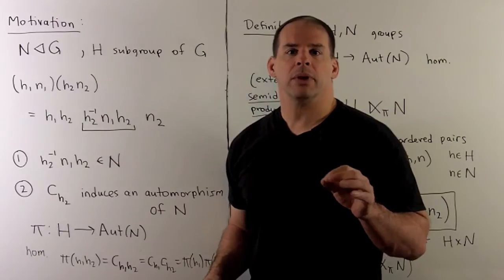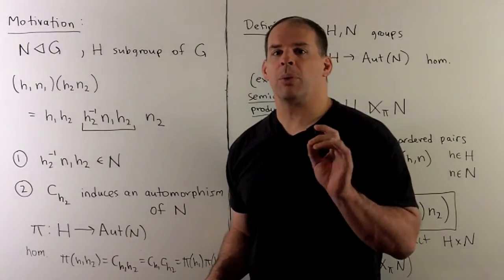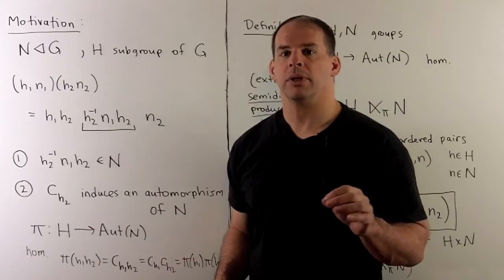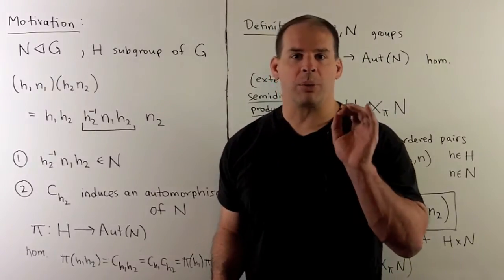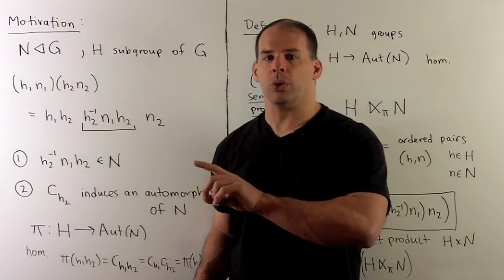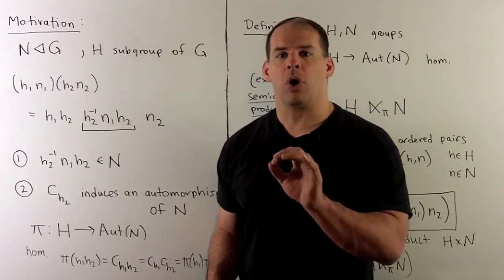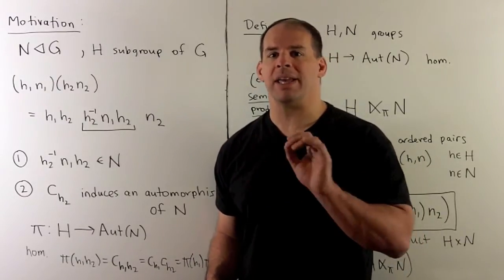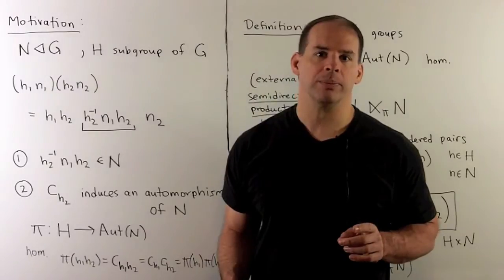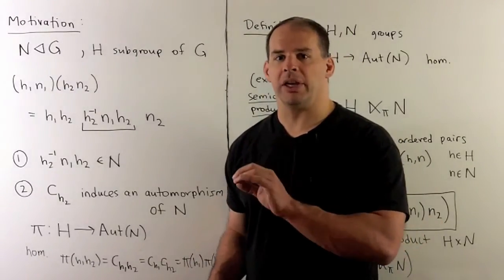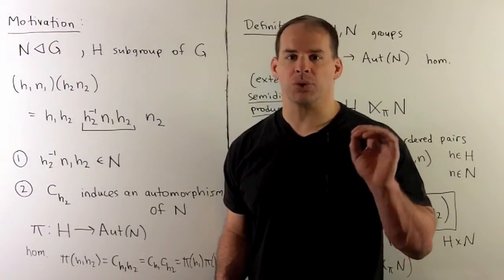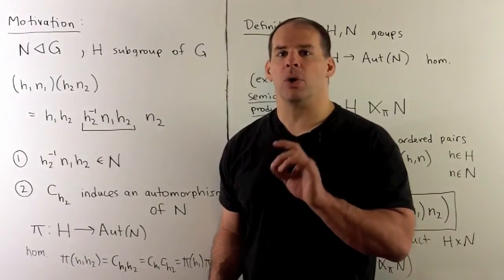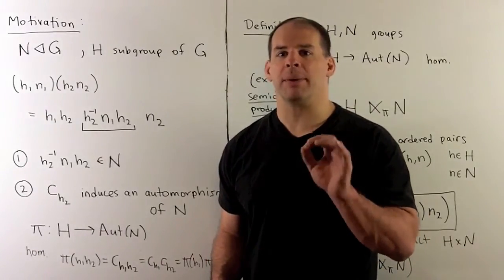Using automorphisms, we revisit the problem of constructing new groups from old groups. Consider the definition of the direct product. We have two groups, and we can form a new group on the Cartesian product by taking the obvious multiplication. If the two groups are abelian, then the direct product is also abelian. We want to generalize this definition to the notion of a semi-direct product.